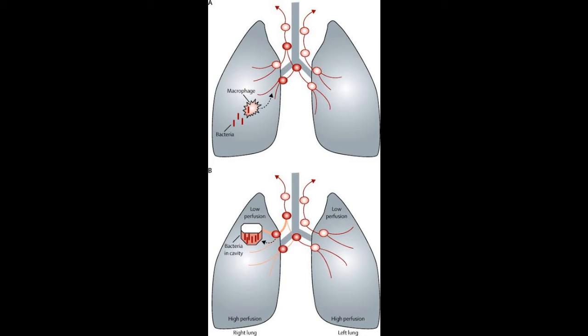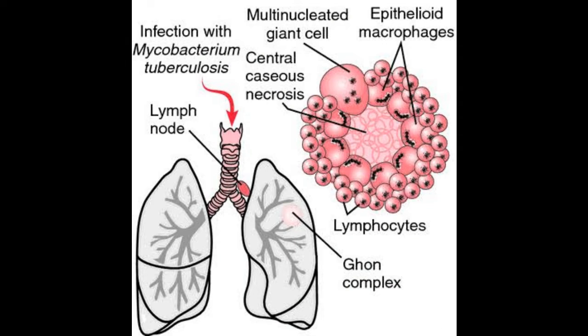Now see the different routes by which tuberculosis spreads in our body. There are four routes: local spread, lymphatic spread, hematogenous spread, and spread by natural passages. In local spread, it is carried by macrophages into surrounding tissues. In lymphatic spread, the spread is through the lymphatic system, transferred from pharynx to bronchi etc.